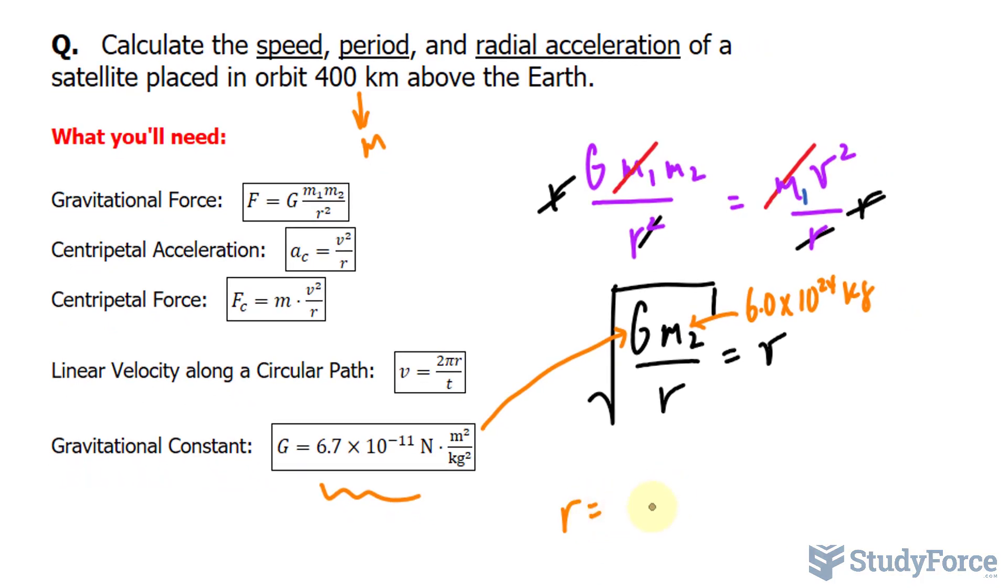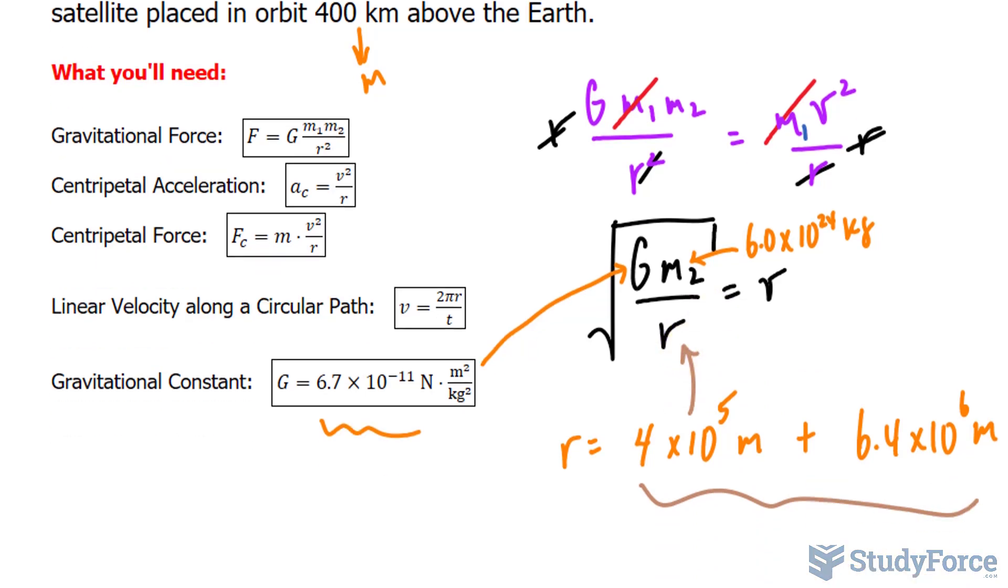So it's the radius of the Earth plus 400 kilometers made into meters. I'll write down radius is 4 × 10⁵ meters plus the radius of the Earth, which is normally given in the question. It's 6.4 × 10⁶ meters. So all of that sum will go in there, and we have everything we need to find the velocity.